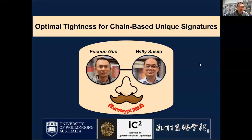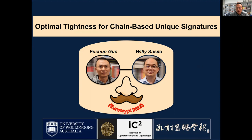Hello, everyone. My name is Fuqueng Guo, and I'm presenting from Australia. The title of our paper is Optimal Tightness for Chain-based Unique Signatures. This work is joined with Willy Sushilou. We are both from the University of Wollongong.